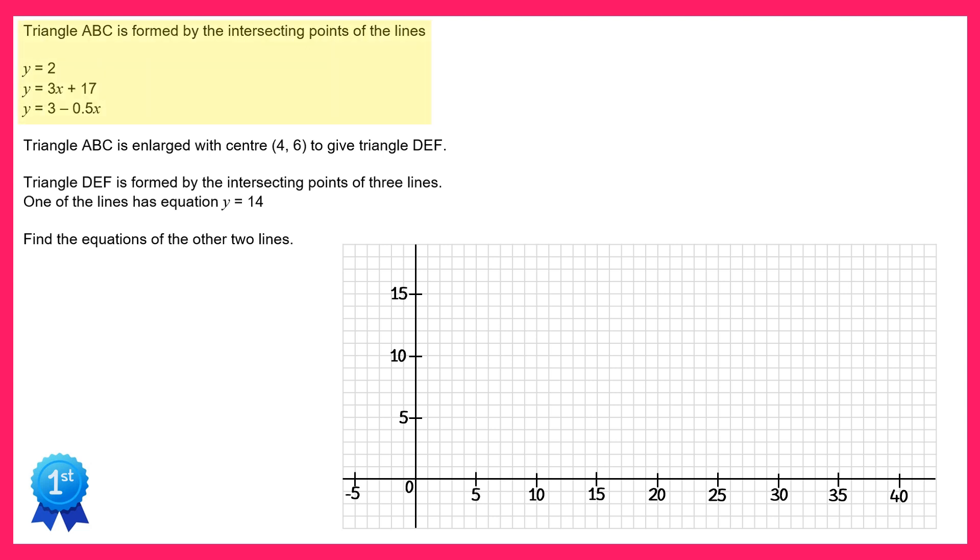The easiest thing to do is just draw those three straight lines or you could use algebra to find the crossing points. I'll start with y equals 2 which goes here, y equals 3x plus 17 which goes here, and y equals 3 take away 0.5x which goes here.